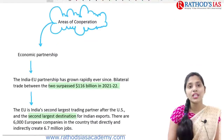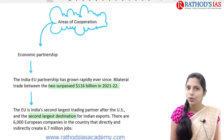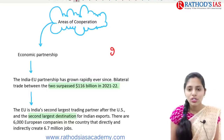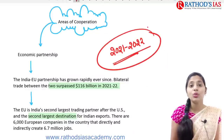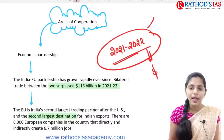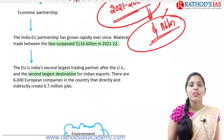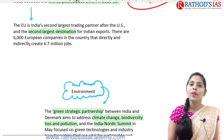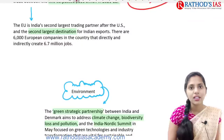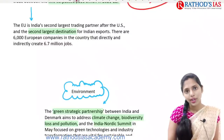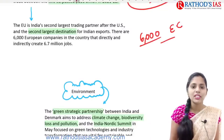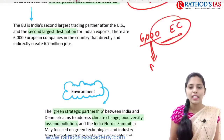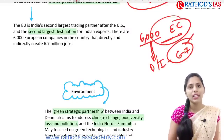Talking about areas of cooperation, first we need to talk about economic partnership between India and the European Union. The trade between India and the EU in 2021-2022 had grown very rapidly and surpassed about $116 billion. The European Union is the second largest trading partner after the US and also the second destination for Indian exports. There are about 6,000 European companies in the country, and those companies are directly or indirectly creating about 6 to 7 million jobs.